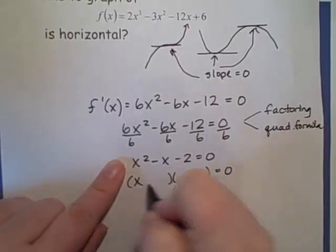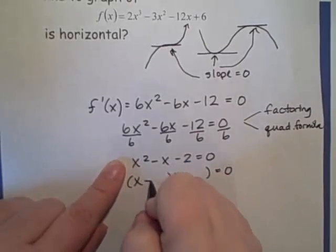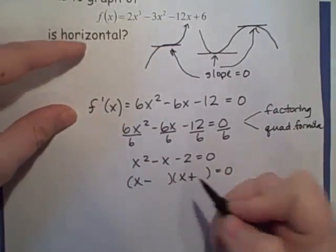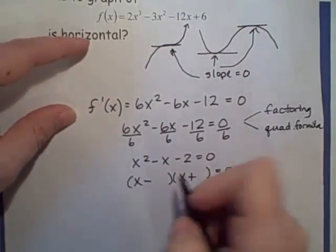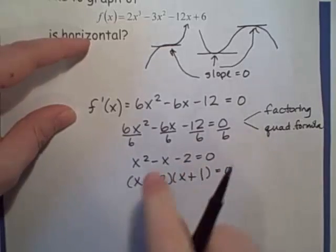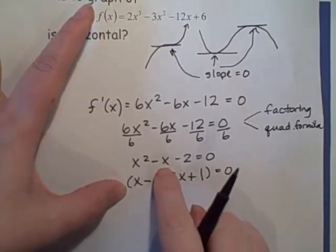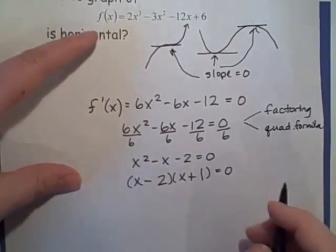Factor. Let's see. x, x. Since this is a negative, I have to have a negative and a positive. And factors of 2 are 2 and 1. So let's see. Let's try this. This gives us x squared plus x minus 2x. That gives us the right middle term. Minus 2. We're good.